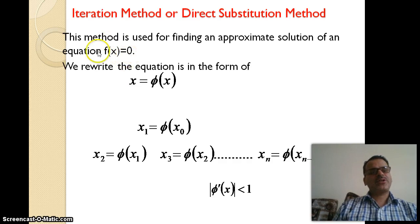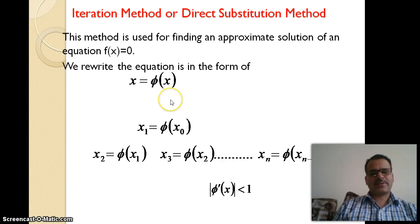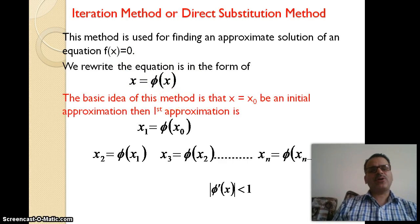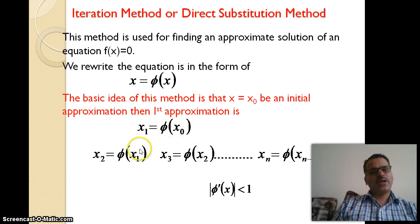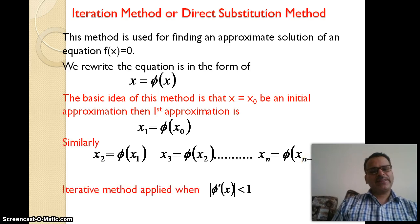We write the equation in a new form: x = φ(x). The basic idea of this method is that x₀ is the initial approximation. The first approximation is x₁ = φ(x₀), second approximation is x₂ = φ(x₁), third approximation is x₃ = φ(x₂), and so on until xₙ = φ(xₙ₋₁).